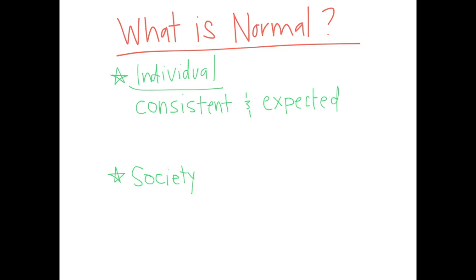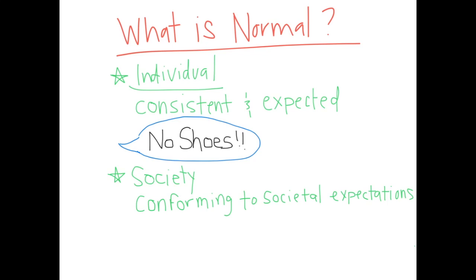Normal behavior from a societal perspective is conforming to those expectations that are set forth by the society. Some great examples of normal behavior in a society are like when you get a cart at a grocery store and you return it after you use it. We all kind of look sideways at people when we see them put their cart off in the parking lot, knowing that it could run into another's car.